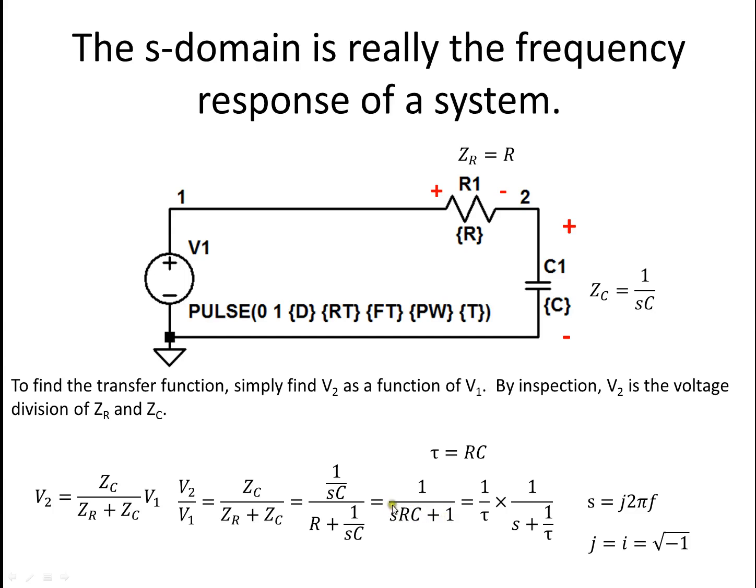So then we substitute the impedance equations and we get 1 divided by sRC plus 1. Now we can tell that RC is τ from here, but to use the inverse Laplace lookup tables it is better to put it in this form: 1/τ times 1 divided by s plus 1/τ.